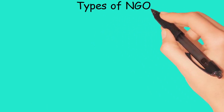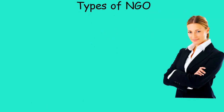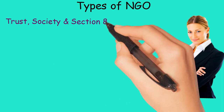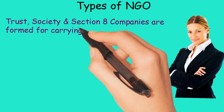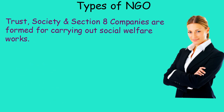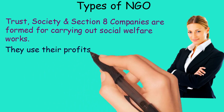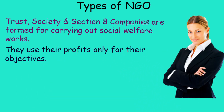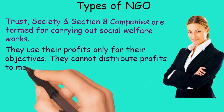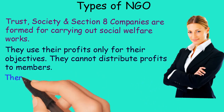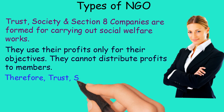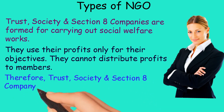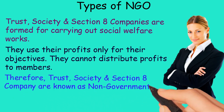Types of NGO: Trusts, Society, and Section 8 Companies are considered as NGOs as they are non-profit organizations. They are formed for carrying out social welfare works, use their profits only for their objectives, and cannot distribute profits to members. Therefore, Trusts, Society, and Section 8 Company are known as Non-Governmental Organizations.